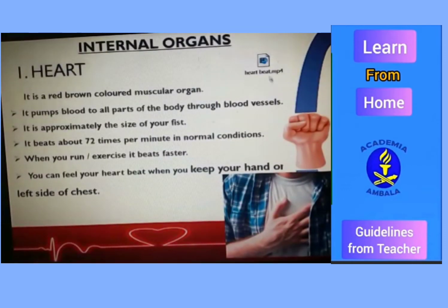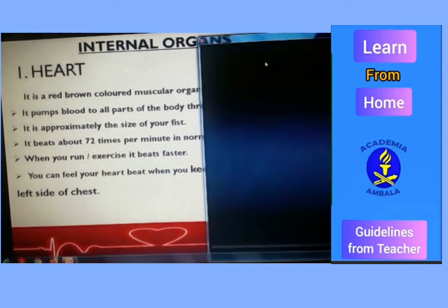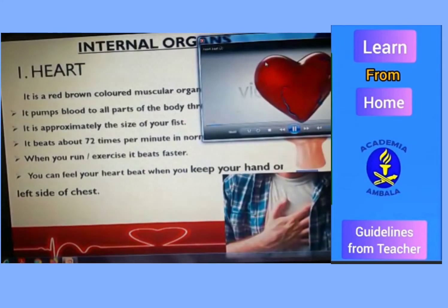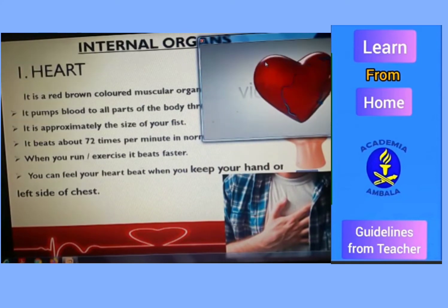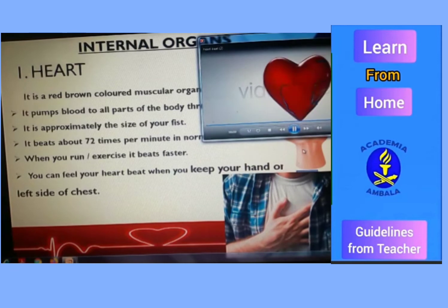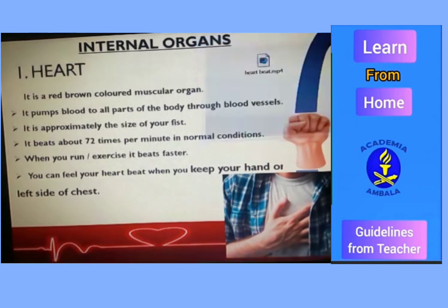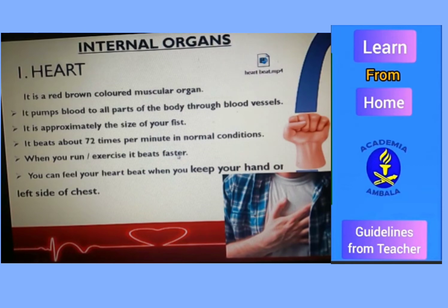The first organ we are going to study is the heart. It is a red-brown colored muscular organ and it pumps blood to all the parts of the body. It is approximately the size of your fist — fist means when the fingers are folded inside your palm. During normal conditions it beats 72 times a minute, and when you exercise or run it beats faster. If you wish to feel your heartbeat, you can keep your hand on the left side of your chest.